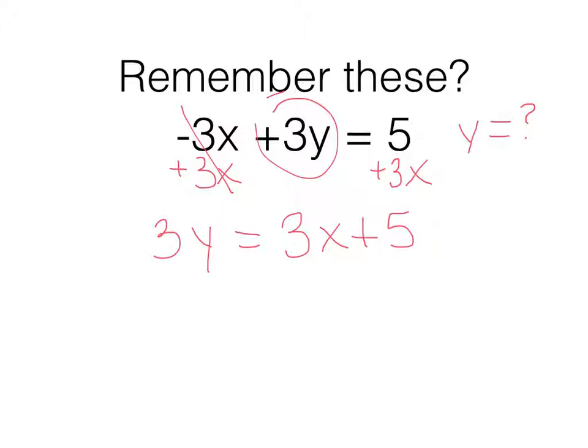Now, I do want y by itself, and 3 is multiplying it. To eliminate the 3 times y, I am going to divide everything through by 3. 3 divided by 3, yes, I now have y all by itself. 3 divided by 3 is 1, so I just have x plus 5 thirds.